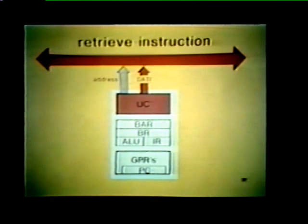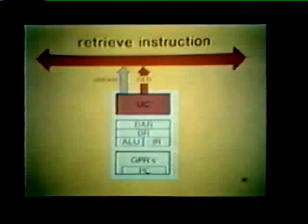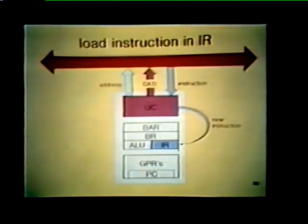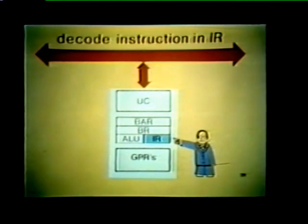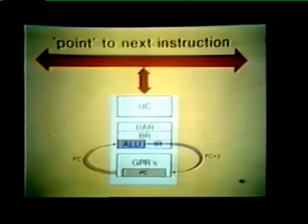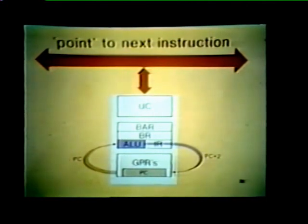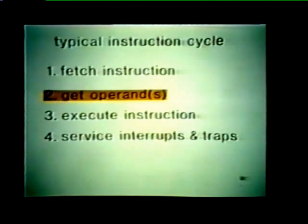The unibus control then places the instruction address on the bus address lines and retrieves the instruction from memory by performing a data I bus cycle. Once the instruction is retrieved, it is loaded into the instruction register, or IR. The processor decodes the new instruction to find out what job it is to perform. The processor also increments the PC by two, so it now points to the next instruction word. The PC is incremented by two because each instruction is a full word, not a byte. At this point, the fetch operation is complete.